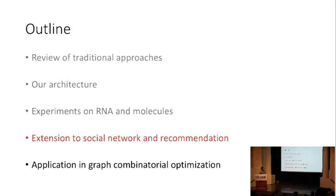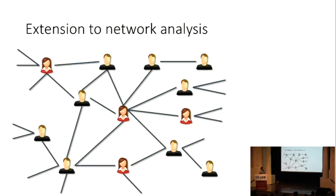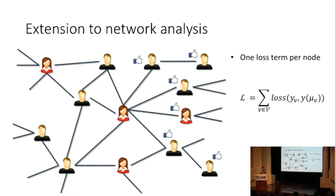We have extended this approach to the network analysis and the recommendation system. Here is an example. Suppose you have a social network where you know some are good guys and some are bad guys, but you only have partially labeled data, and you want to infer the labels for the rest of the users. The modification is simple. You just modify the loss function to each of the nodes in the graph, instead of a single objective function for the entire graph.